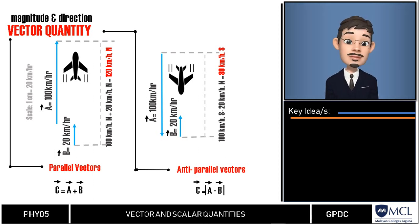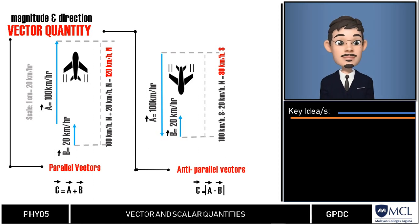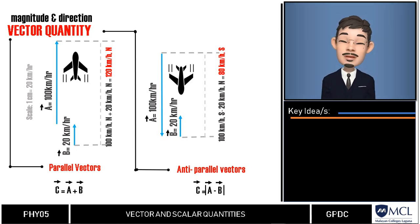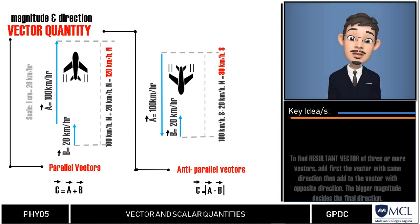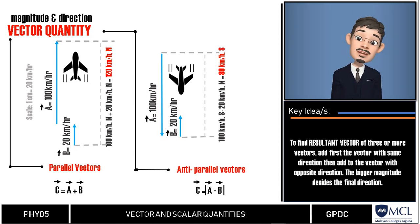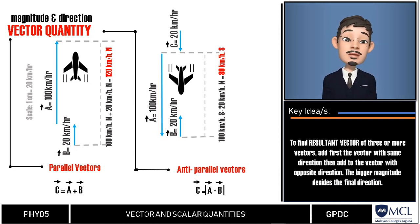When we need to add more than two vectors, we may first find the vector sum of any two, add this vectorially to the third and so on. For example, there was a storm forming due north of a small plane. That is why the pilot decided to make a U-turn. In our example, there's a tailwind with 20 km per hour velocity and the north wind is also 20 km per hour, which we would design as vector C.